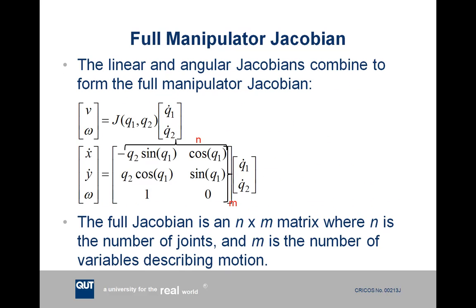So we can combine both of these Jacobians that we've worked out, the linear Jacobian and the angular Jacobian, to form the full manipulator Jacobian. So this is the complete Jacobian matrix. And it has the form that you can see there where it has n columns and n corresponds to the number of joints of the robot. So this is for a two joint robot and it has m rows. And m is the number of variables describing the motion of the tool point. So we have x and y which are linear velocities and we also have omega which is a rotational velocity. So we have three variables describing the motion of the tool point.